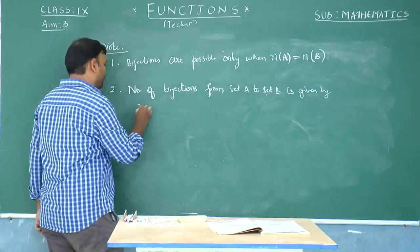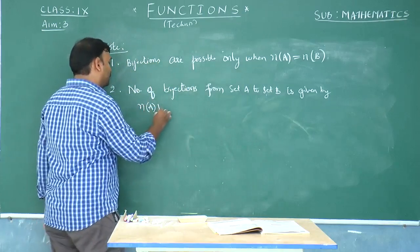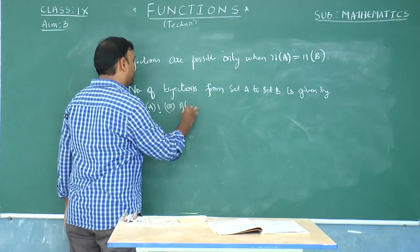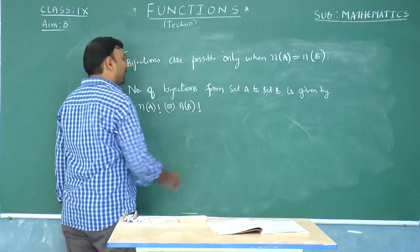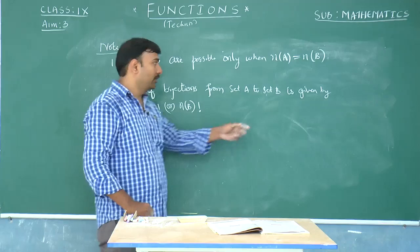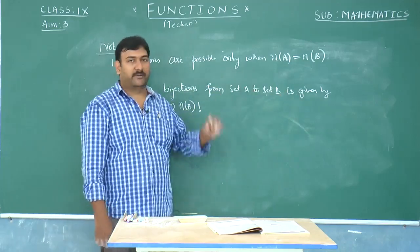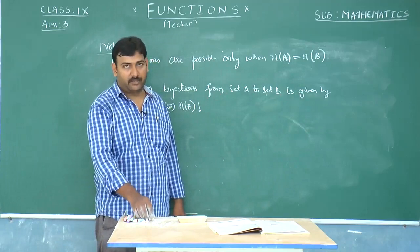By n(a) factorial or n(b) factorial, because a and b contain the same number of elements, then only the bijections are possible. If they contain unequal number of elements, the number of bijections becomes 0.